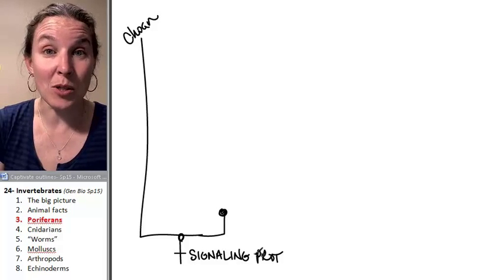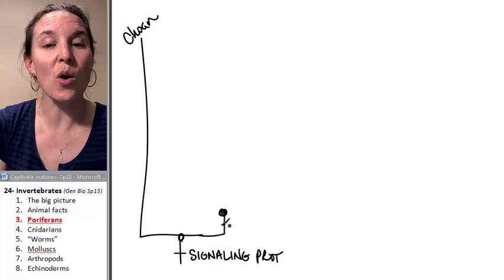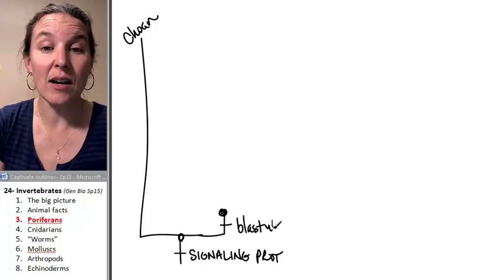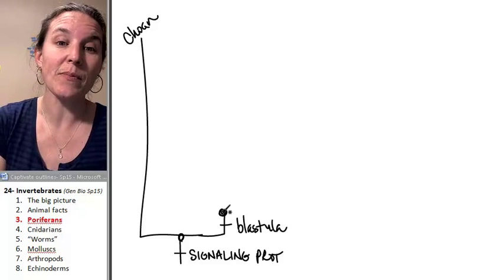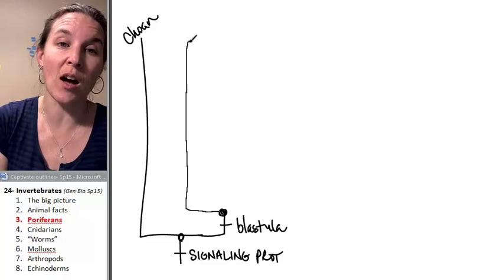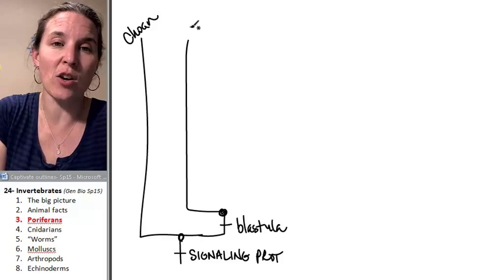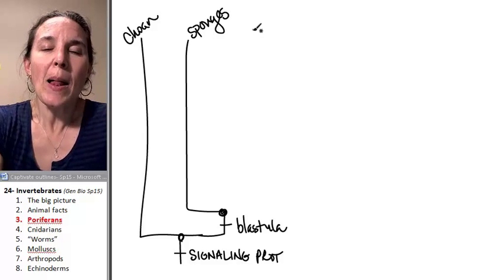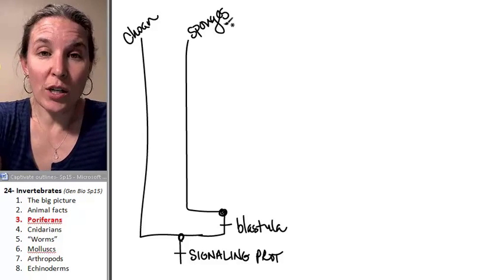They're not animals. So everybody beyond this point has the blastula. Our first group of animals that branches off with the blastula is the sponges — they're called porifera, but you can go ahead and call them sponges. So we're going to look at sponges and choanoflagellates.